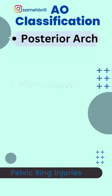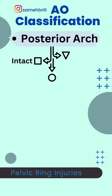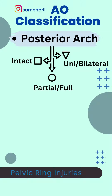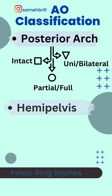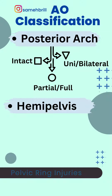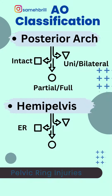For posterior arch integrity, it can be intact, partially or fully disrupted, unilateral or bilateral. For hemipelvis displacement, it can be externally rotated, internally rotated, and vertically displaced.